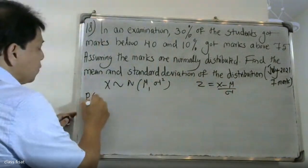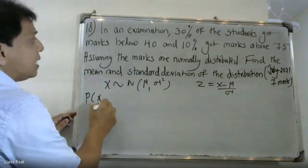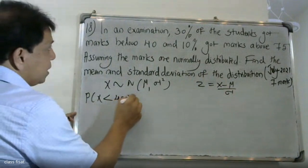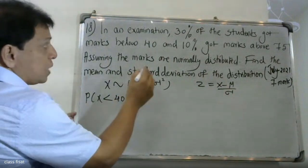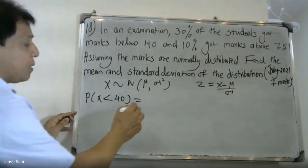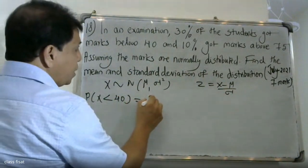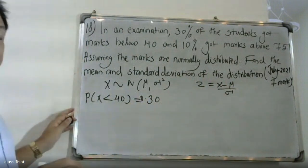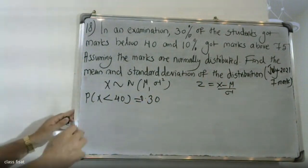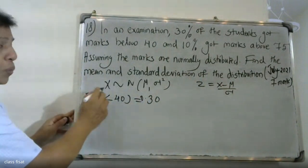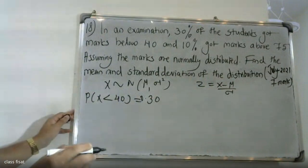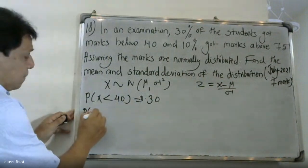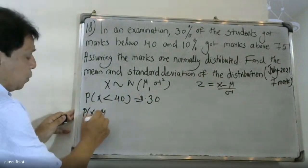The probability of X less than 40 is equal to 30%, that is 0.30. We can convert X into the standard normal variable Z using Z equals X minus mu by sigma.